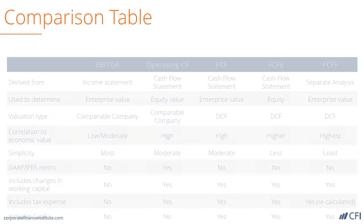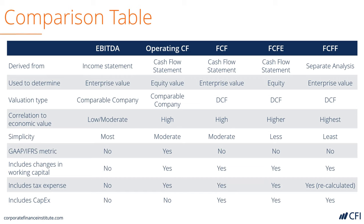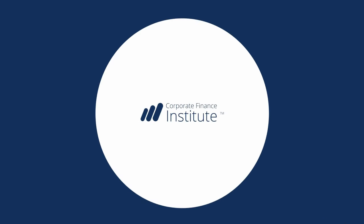Now let's look at a comparison of all these cash flow metrics together. Working from EBITDA on the left to free cash flow to the firm on the right, we move from the simplest to the most complicated cash flow metrics, and also from the least to the most directly correlated to the economic value of an enterprise. When a financial analyst talks about cash flow, it could mean different things in different situations. It's always important to clarify exactly which type of cash flow and understand when each type is appropriate. To learn more, please check out our business valuation modeling course.